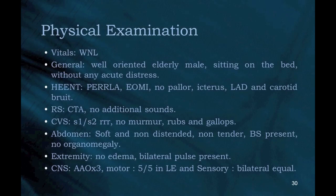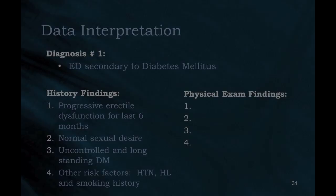Physical Examination: Vitals within normal limits. General: well-oriented elderly male, sitting on bed, without acute distress. HEENT: pupils equal, round, reactive to light and accommodation; external ocular movement intact; no pallor, icterus, lymphadenopathy, or carotid bruit. Respiratory: clear to auscultation, no additional sounds. Cardiovascular: S1 and S2 regular rate and rhythm, no murmur, rubs, or gallops. Abdomen: soft, non-distended, non-tender, bowel sounds present, no organomegaly. Extremities: no edema, bilateral pulses present. CNS: alert and oriented to person, place, and time; motor 5/5 in lower extremities; sensory bilateral equal.